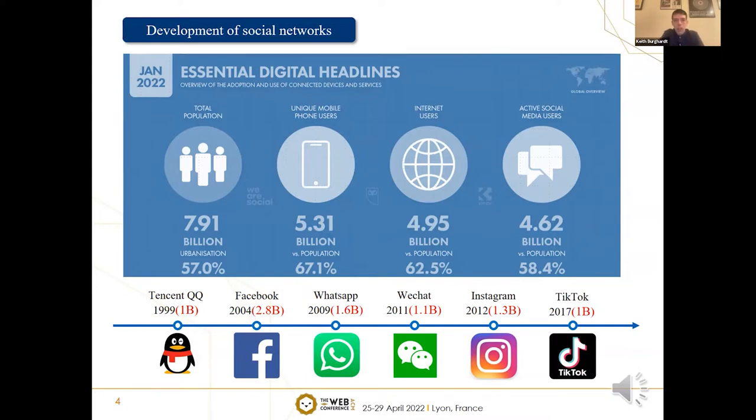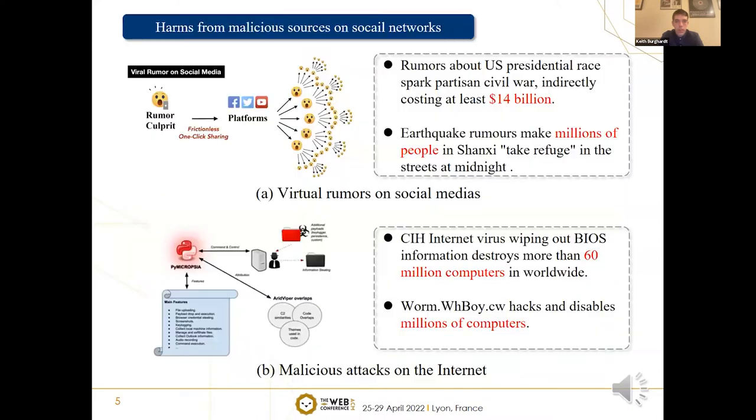While social networks bring convenience to people, they also have many hidden dangers. For example, rumors on social networks will endanger the stability of the country or society and affect people's normal lives. More specifically, the rumors related to the partisan fight during the US presidential election result in an indirect loss of 14 billion to the government.